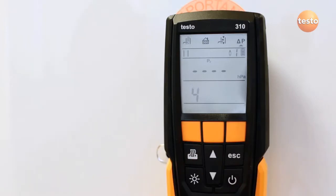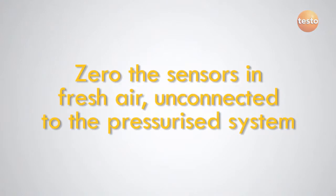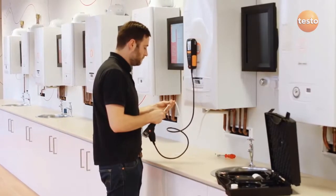Press start to zero the pressure sensor before connecting the probe to the gas supply with the silicon hose. Again, it's important that the sensors are zeroed in fresh air, not connected to the pressurized system. When the pressure sensor has been zeroed...